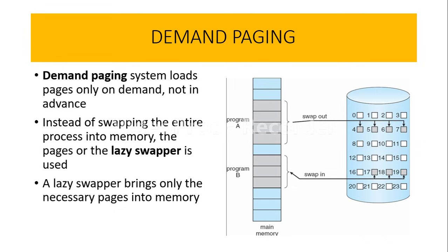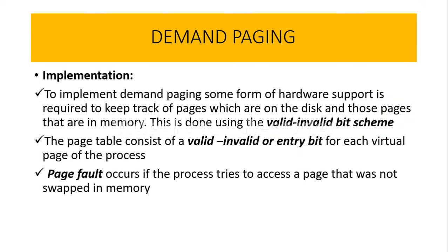To implement demand paging, we need a special kind of hardware support. This hardware support is going to keep track of the pages — that is, which pages are placed on the disk and which are in the main memory. This tracking is done using a scheme called the valid-invalid bit scheme, maintained in the page table.